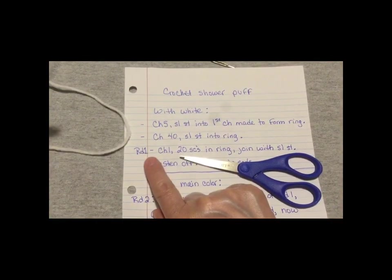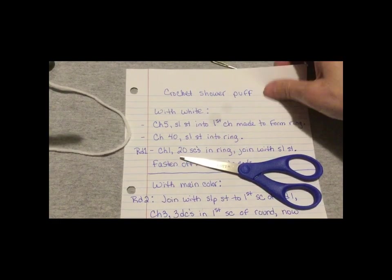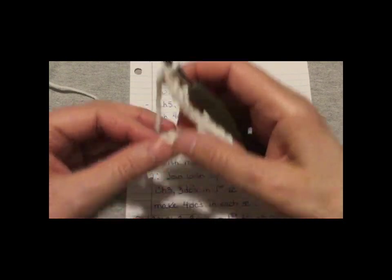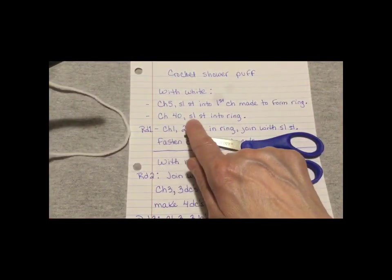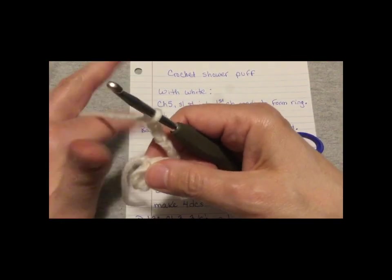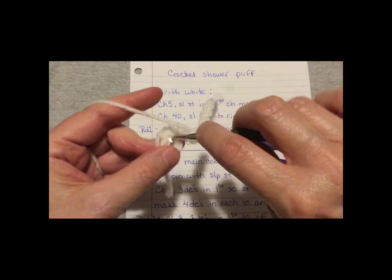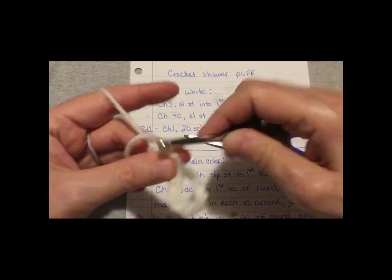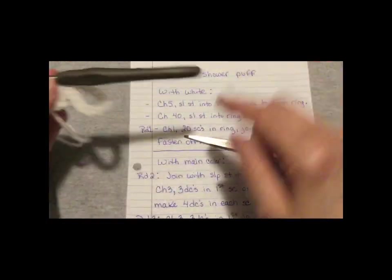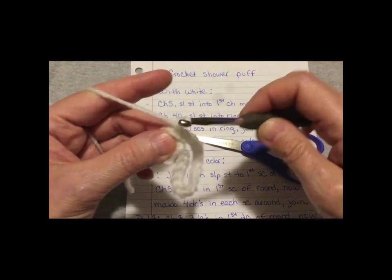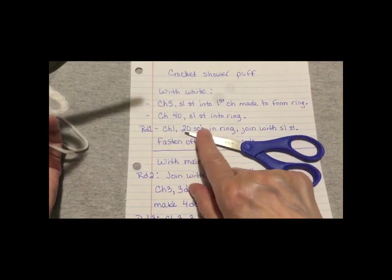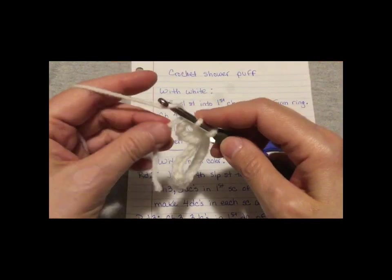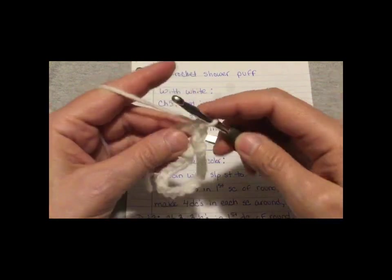So round one, still using the white. After I chained the 40, I'm going to slip stitch into the ring. And this is how you do that. Just right there, and slip stitch. And there you got that. So chain 1. There we go, I chained 1. Now I'm going to do 20 single crochets in the ring. So let's do that while going over my tail, so I don't have to weave that in later.